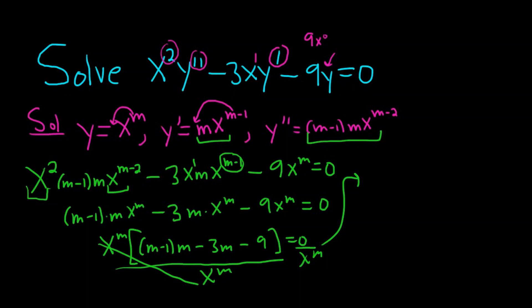So we get m minus 1 times m, then minus 3m minus 9. And that's equal to 0. We can distribute the m. So we get m squared minus m minus 3m minus 9. And that's equal to 0.